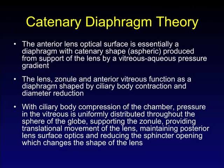The catenary diaphragm theory simply means that the anterior lens optical surface is a diaphragm with a catenary shape produced by support of the lens from a vitreous-aqueous pressure gradient. The lens, zonule, and anterior vitreous function as a diaphragm shaped by the ciliary body contraction and diameter reduction. The ciliary body compression of the chamber of pressure in the vitreous is uniformly distributed throughout the sphere of the globe — essentially Pascal's law. It supports the zonule, provides a translational movement of the lens, maintains a posterior lens surface optical shape, and reduces the sphincter opening, which changes the shape of the lens.